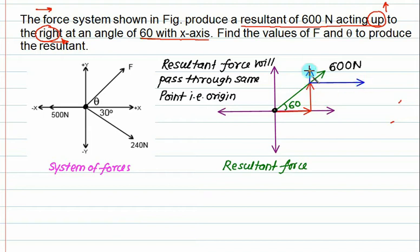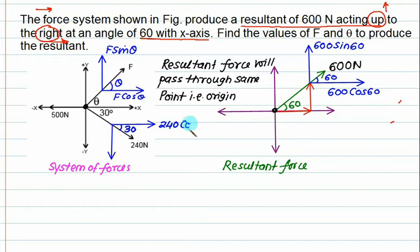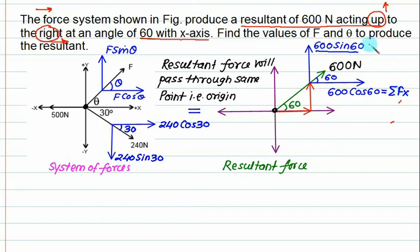Resolving the 600 N resultant: one component is 600 cos 60 and the other is 600 sin 60. Similarly, resolving the 240 N force at 30 degrees: the horizontal component is 240 cos 30 and the vertical component is 240 sin 30. Horizontal and vertical forces do not need to be resolved. We can also resolve force F as F cos theta and F sin theta. Both figures are the same, so sigma Fx and sigma Fy can be collected from these.